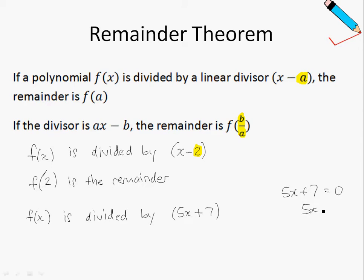So solving this, let me just show you how this is solved. So 5x + 7 = 0, which gives x equals negative 7 divided by 5. Then using this solution we can say that f(-7/5) is the remainder.